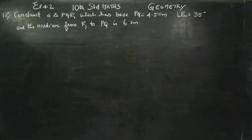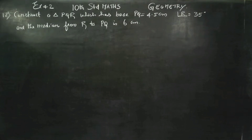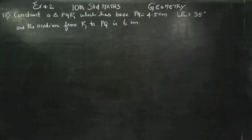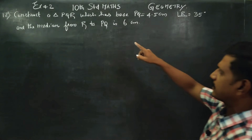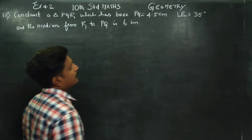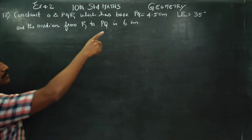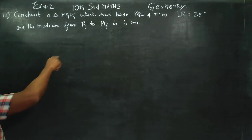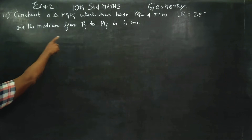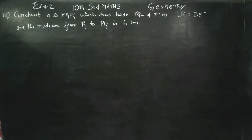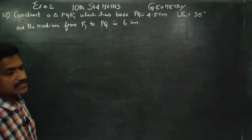Hello 10th standard students, I am Karanagaran. Today we are going to see geometry, exercise number 4.2: construct triangle PQR which has a base PQ of 4.5 cm, top angle 35 degrees, and the median from R to PQ is 6 cm.